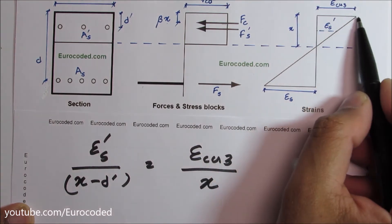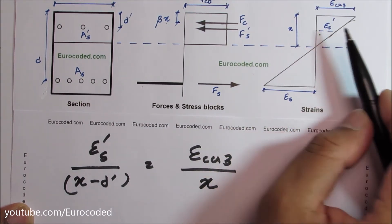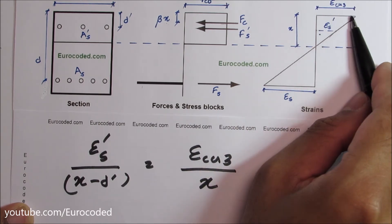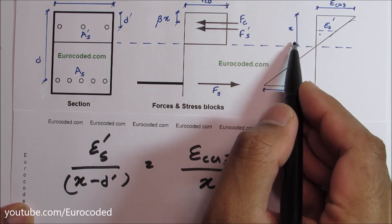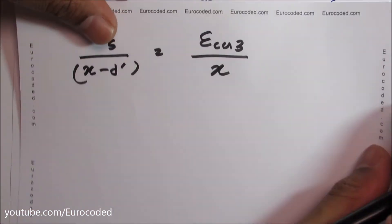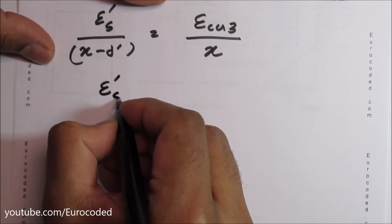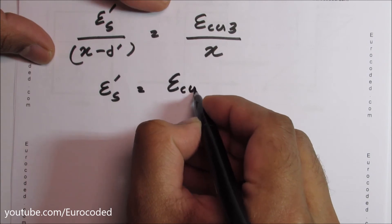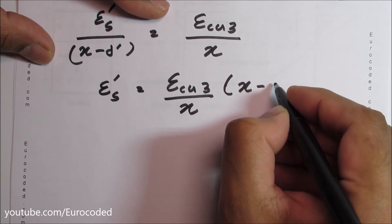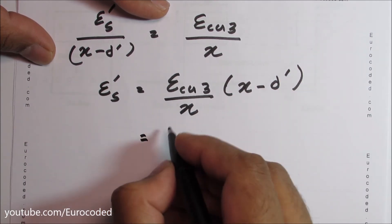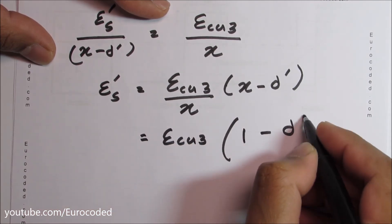For the compression reinforcement, we look at the similar triangles in the strain diagram. The strain ε'S equals εCu3 over X times (X minus D'), which can be rewritten as εCu3 times (1 minus D'/X).